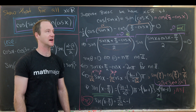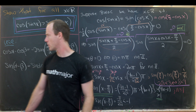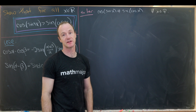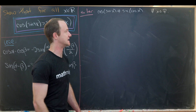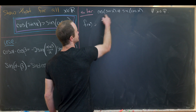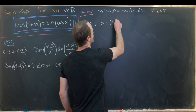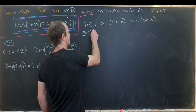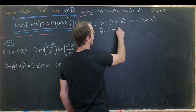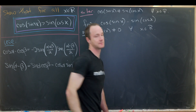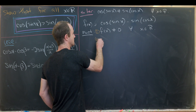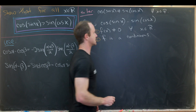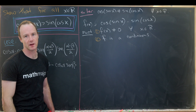Between this and the homework exercise, we've shown the equation cos(sin x) = sin(cos x) has no real solution. Now we'll prove the inequality always holds by defining f(x) = cos(sin x) - sin(cos x). We've shown f(x) ≠ 0 for all real x. Also, f is continuous because it's a composition of continuous functions on the whole real line.